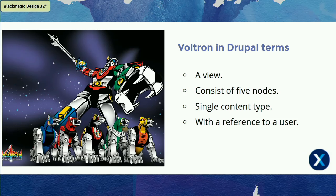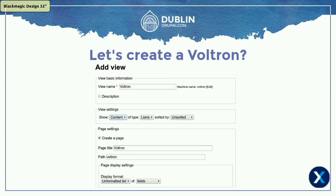In Drupal terms — Voltron is a view. It consists of five nodes, which are the lions. Because everything is a lion, the building block is a lion — it consists of a single entity type, a content type. Then we have an entity reference or user reference to paladins, also called a paladin entity. So we can build a view from these lions and build a Voltron out of that. Let's do that — first we add a simple lion content type.